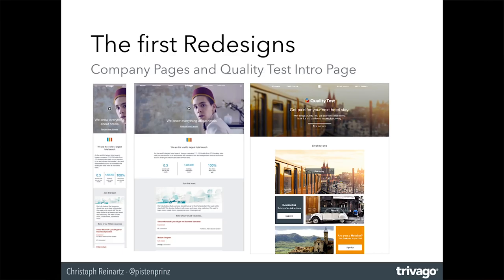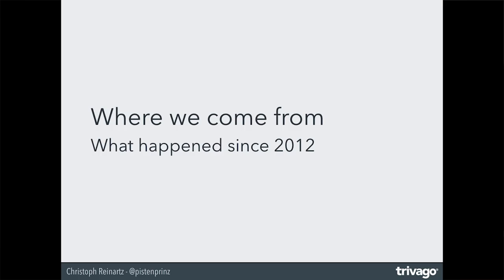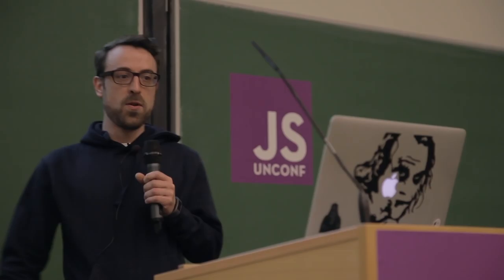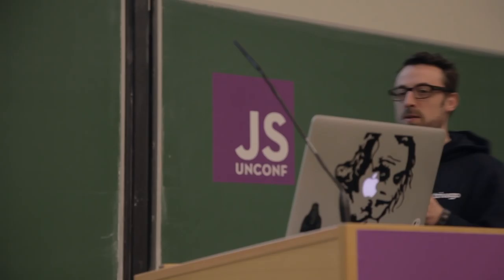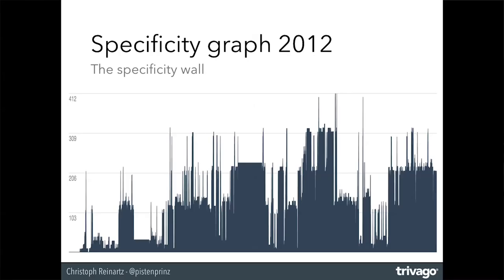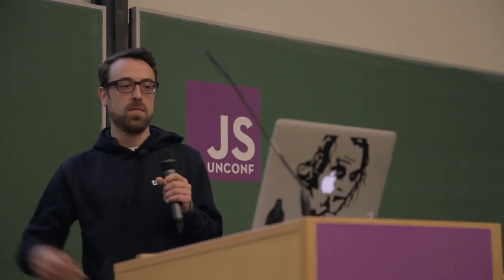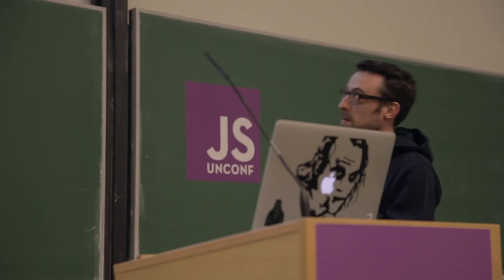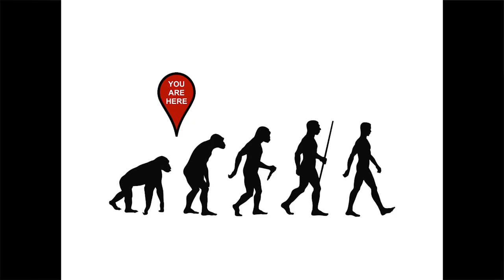Coming back to our core product — I started at Trivago at the end of 2012, and the first time I opened the CSS files, which were .inc files, I started to cry. Then I made a bit of code analysis, and you might know specificity in CSS. I like to call what I found the specificity wall. That happens if you don't have a design system, a front-end system, and back-end devs just open the file, put the selector at the bottom, and if it doesn't work, they add an !important.